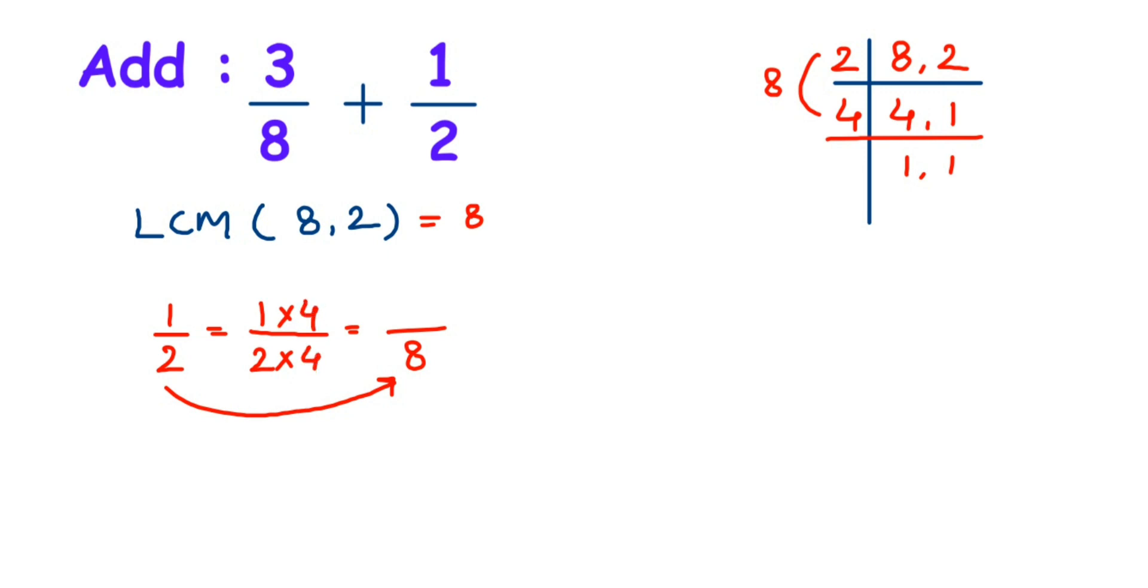So multiply 4 in the denominator and in the numerator. So 1 times 4 is 4. So instead of taking 1 by 2, we're going to take 4 by 8 here, because 4 by 8 is the equivalent fraction of 1 by 2.